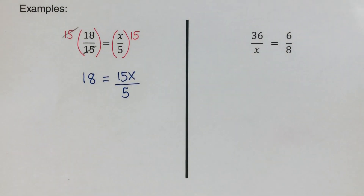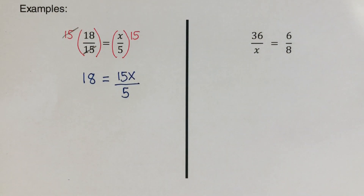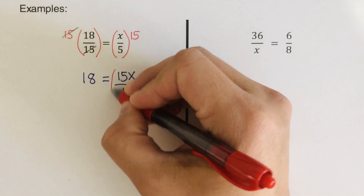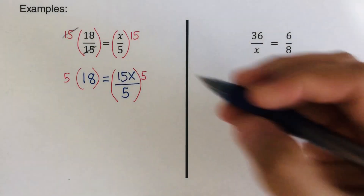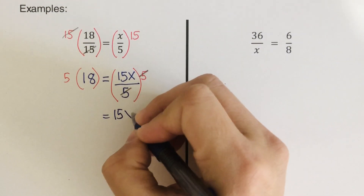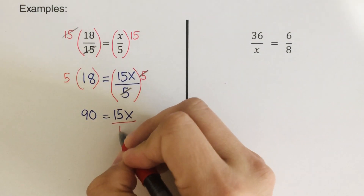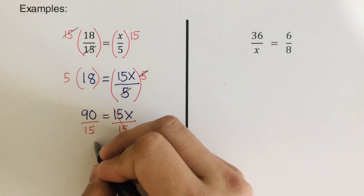In some cases you can divide 15 by 5 to get a whole number, but if that doesn't work, we use the longer method. Since there is a 5 in the denominator, multiply both sides by 5 and cross them out, leaving 15x equal to 5 times 18, which is 90. Dividing both sides by 15, we get x equal to 6.